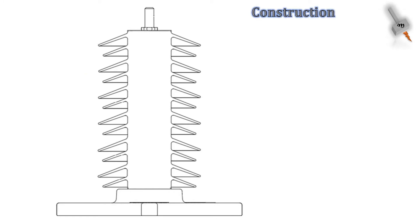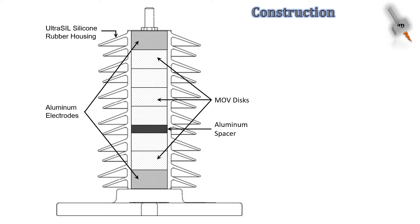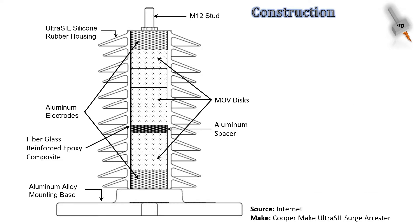I am sure many people related to Surge Arrester industry or power sector might already be aware of the construction of Surge Arrester. But for others, please refer to the indicated image. The major components being Silicon Rubber Housing or Enclosure, Aluminium Electrodes, MOV, Aluminium Spacer if required, Fiber Composite Reinforcement, Line Terminal and Mounting Base. But today we will only discuss about the MOV Disks.